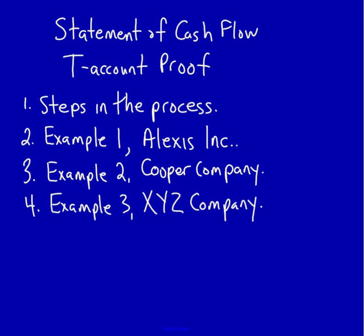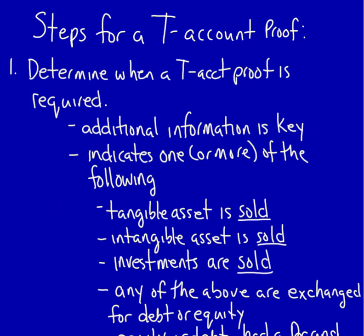Let's start with the steps in the process. For doing a T-account proof, the first thing we have to do is determine whether a T-account proof is even required. If any of the following things exist in your cash flow question, you know you're going to have to do a T-account proof. The key is looking at the additional information — it will always indicate if multiple or only one of the following conditions exists.